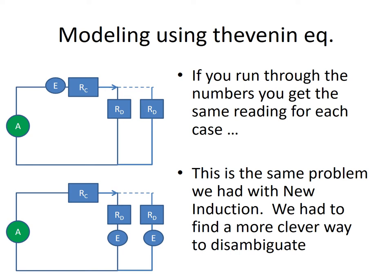We had the same kind of problem with new induction — we couldn't tell the difference on a closed loop of wire using either classical theory, which is a transverse electromagnetic field, or new electromagnetism, which has a spherical field. The reason is that the closed loop causes a constraint which creates an ambiguity, giving the same answer no matter what we did. We've had this problem before; we just have to figure out how to disambiguate. For new induction, we disambiguated by going to an open-loop experiment, and we have to find a clever way to disambiguate in this case as well.